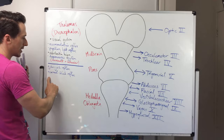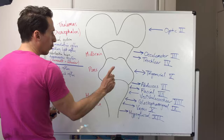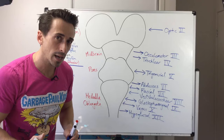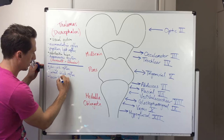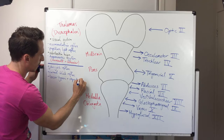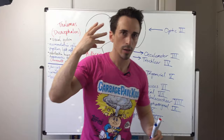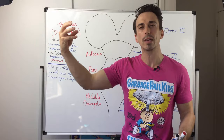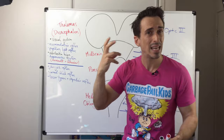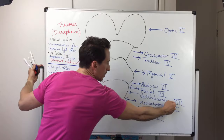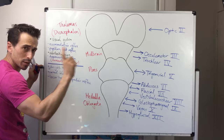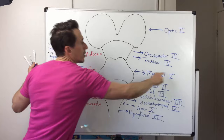One more reflex at the pons: the tensor tympanae and stapedius reflex. When you hear a really loud sound, the tensor tympanae and stapedius reflexively contract, dampening any further incoming sound to protect the cochlea and eardrum. The sensory in is the vestibulocochlear nerve, and the motor out — telling the tensor tympanae and stapedius to contract — is the trigeminal nerve.